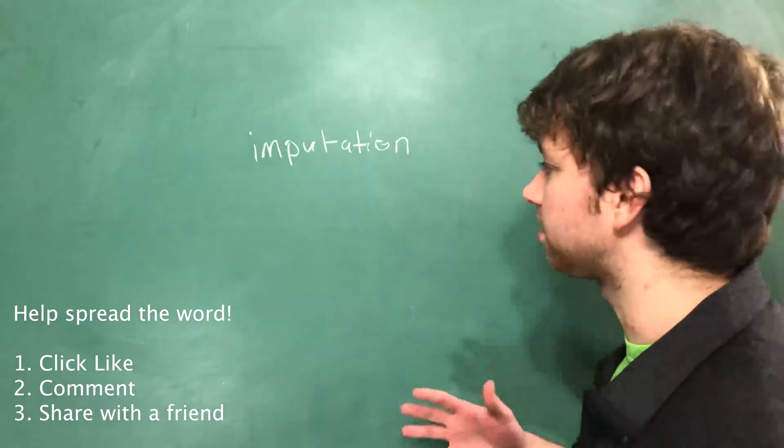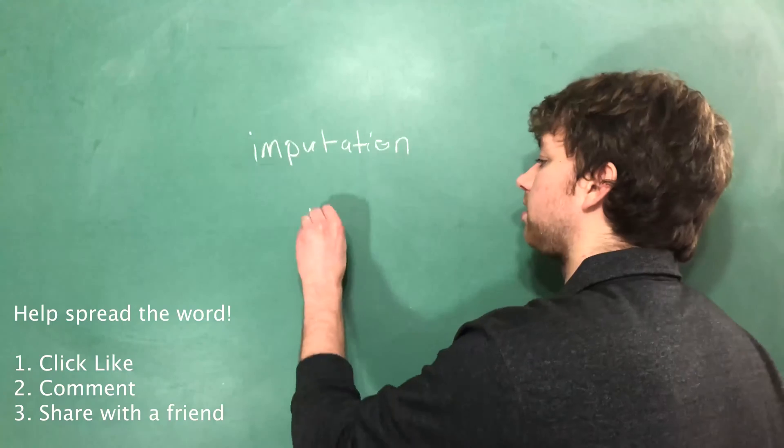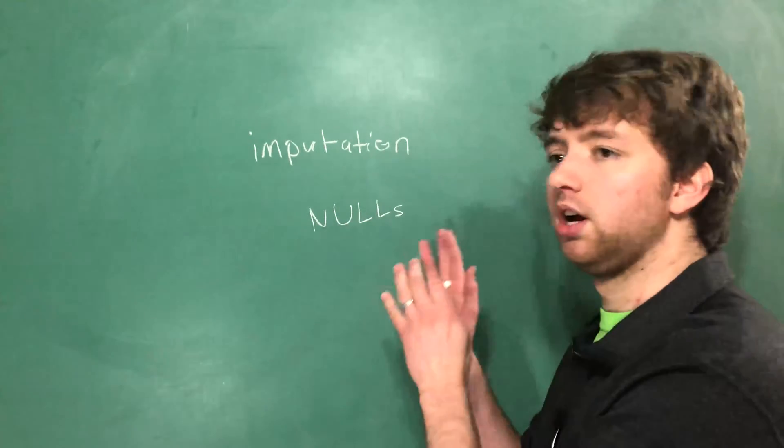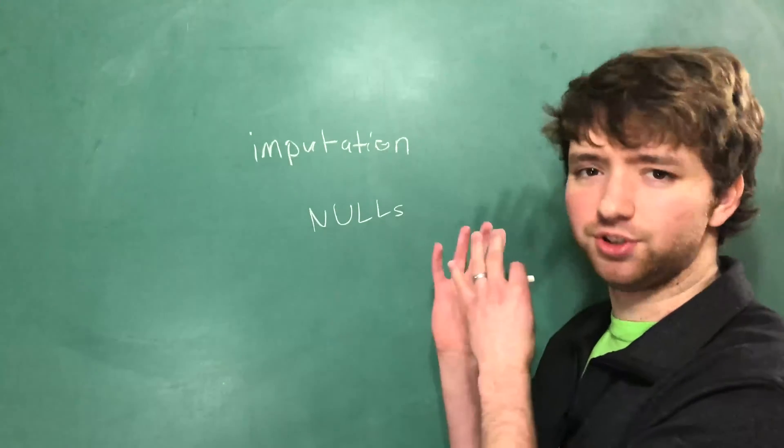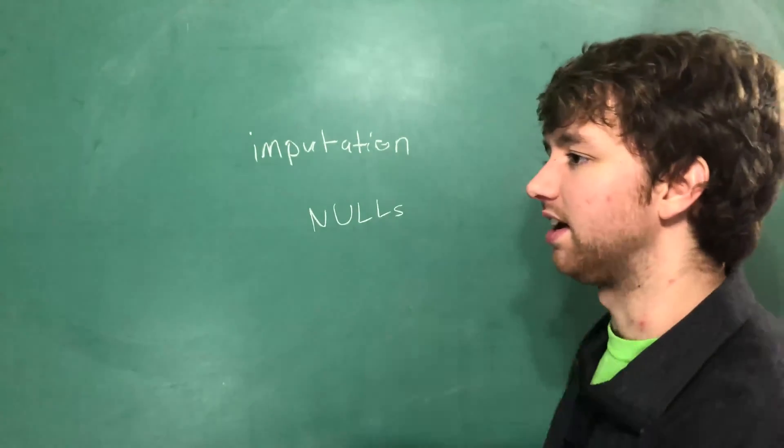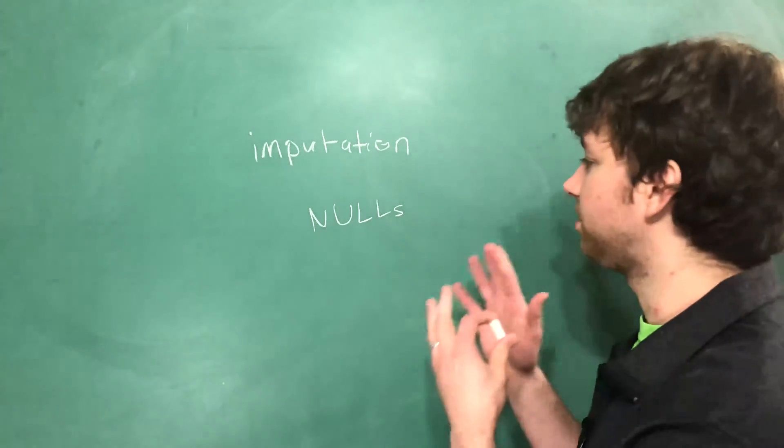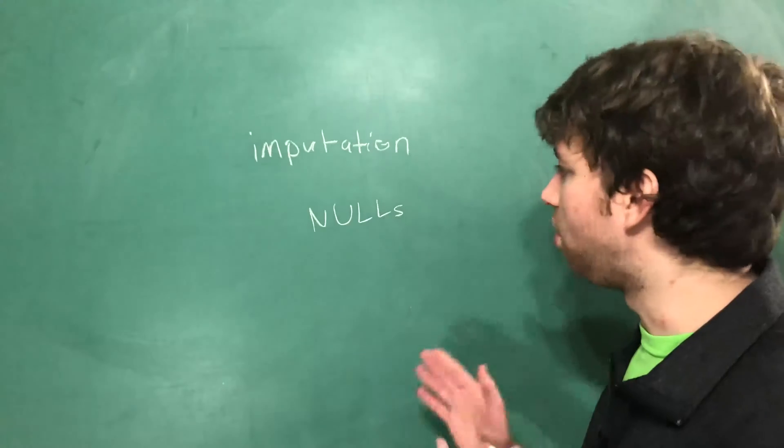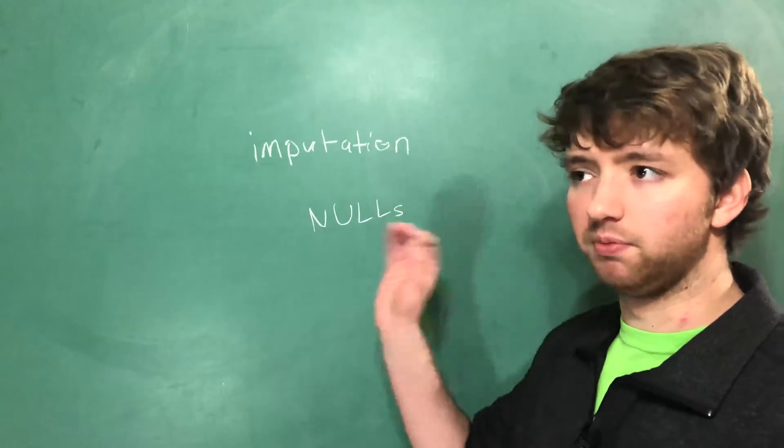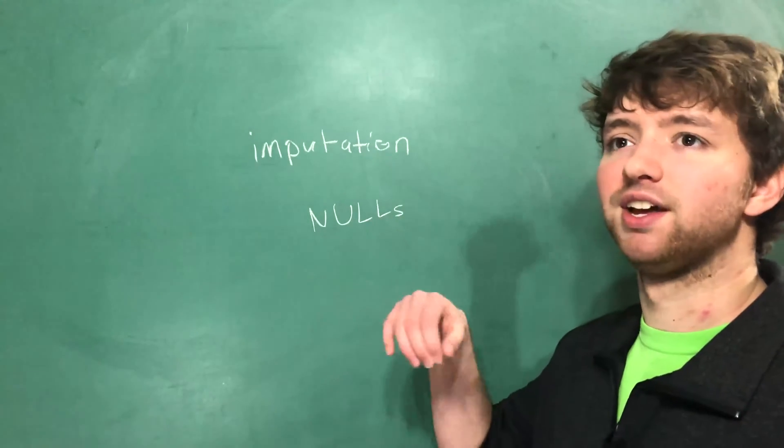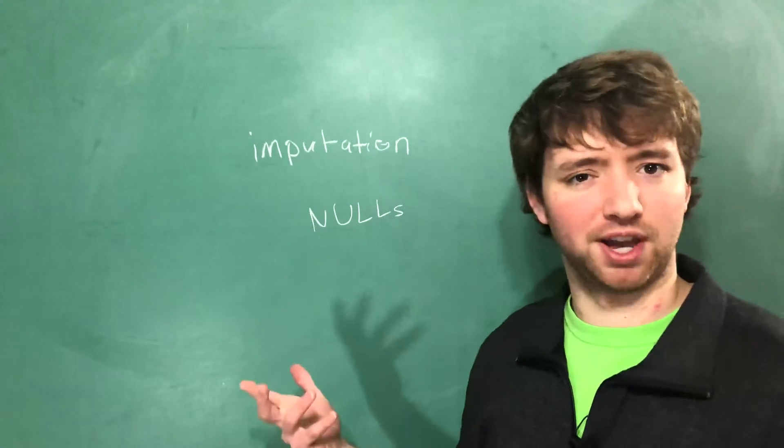Imputation is the process where you take nulls and you replace them with a pretty good value to use instead of null. So you don't want to get rid of this feature but you don't want to have a bunch of nulls. So you replace the nulls with something that would still be okay.